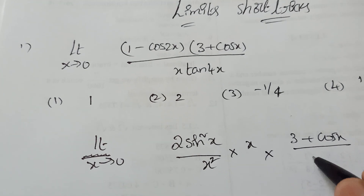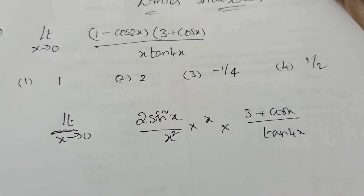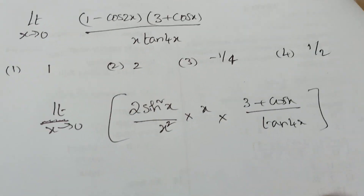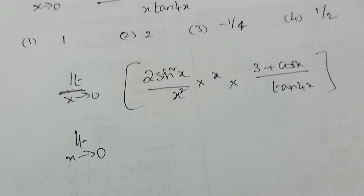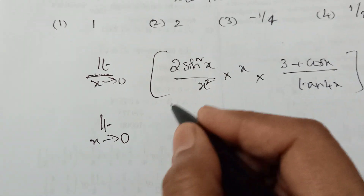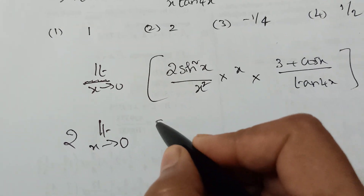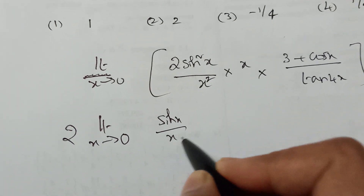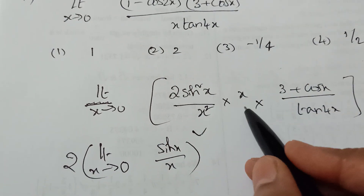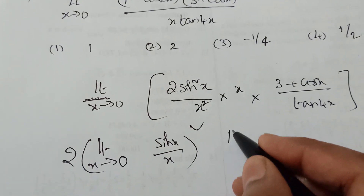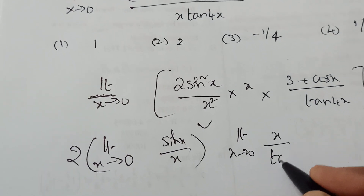Now apply the limit. We separate it into individual limits. The (sinx/x)² part gives 1 squared equals 1. We also handle the x/tan4x term as a separate limit.